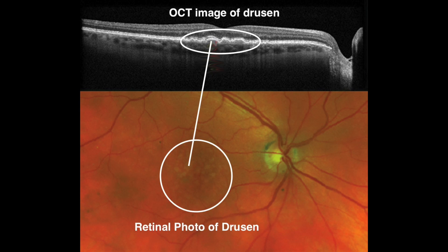Another test you'll want to have done is called an OCT, which stands for ocular coherence tomography. Basically this is a high-definition scan that uses light waves instead of sound waves, and it gives us a cross-section of the retina so we can see what layer the drusen are located at and if there's anything else going on. This is a very critical test to differentiate between dry and wet macular degeneration because OCT lets us see if there's leaking of fluid or blood underneath the retina, which would indicate wet macular degeneration.